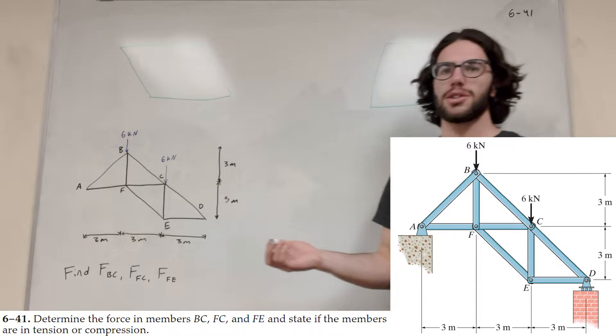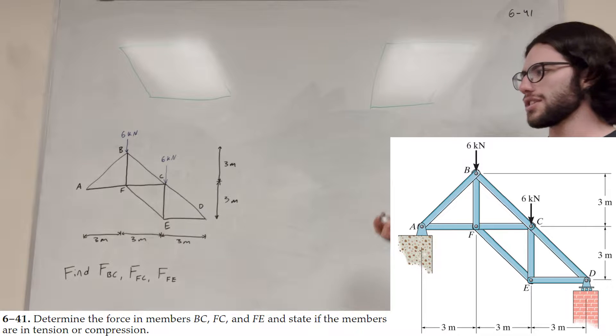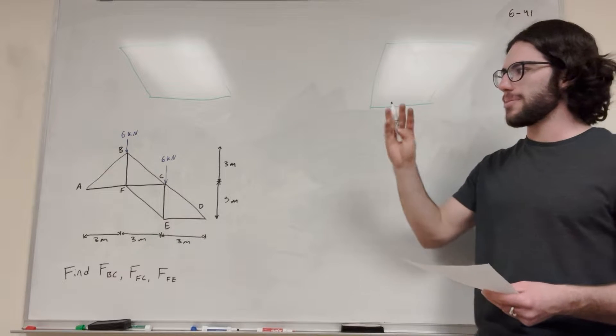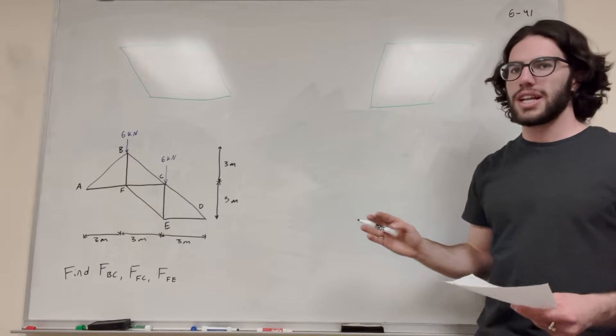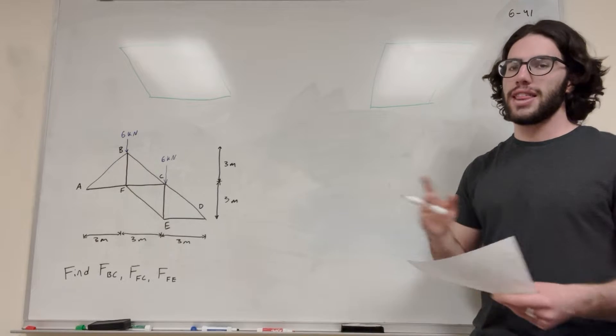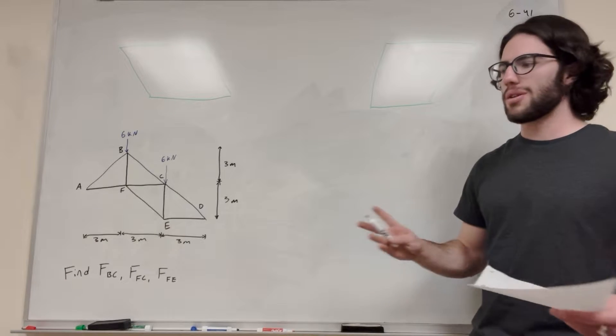So let's get started. We're using the method of sections, and that means we're going to need to basically make a cut. But before we make a cut, we need to finish this free body diagram and make sure that we know all of our unknowns.